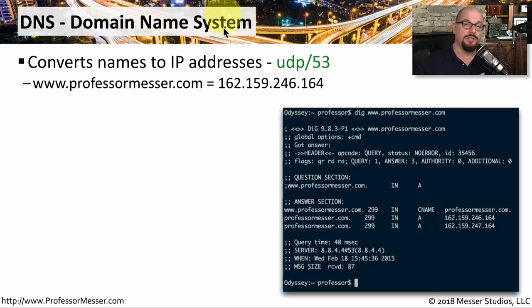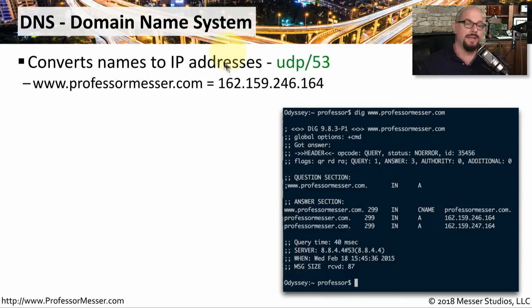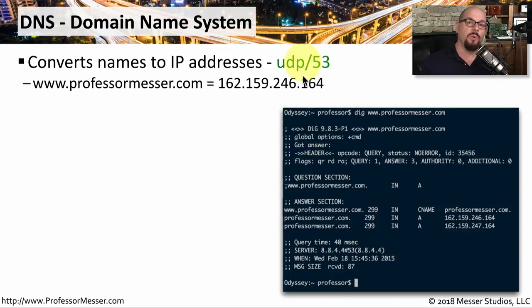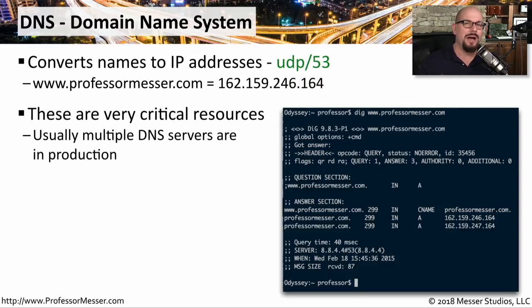DNS is the Domain Name System. It's a protocol that most people don't even realize is going over their network because all of the communication happens behind the scenes. One of the primary roles of DNS is to convert the names that we use inside of a browser to something that the network can use, such as an IP address. So if you're in a browser and you type in www.professormesser.com, your machine goes out to a DNS server to request the IP address of that device, and it may return an IP address such as this one. It uses UDP port 53 to perform that communication. We don't commonly remember the IP address of a server, so instead we use DNS servers to take the name we can remember and convert it to an IP address that can be used across the network.